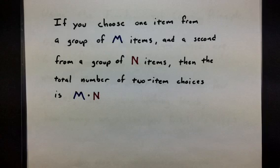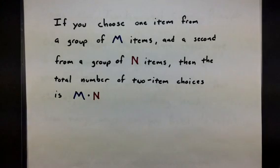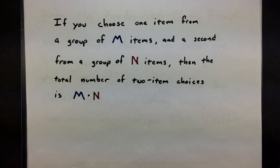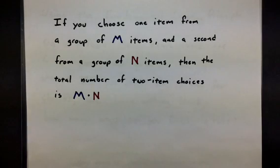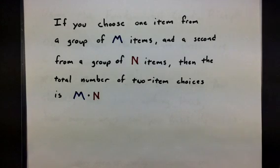The great part about this principle is it also applies if you have three groups of items — say, m items, n items, and maybe another set of t items. Again, you would multiply by that additional group.